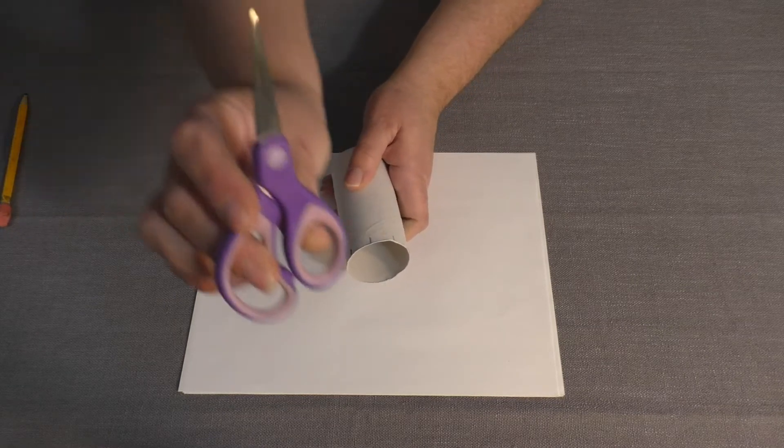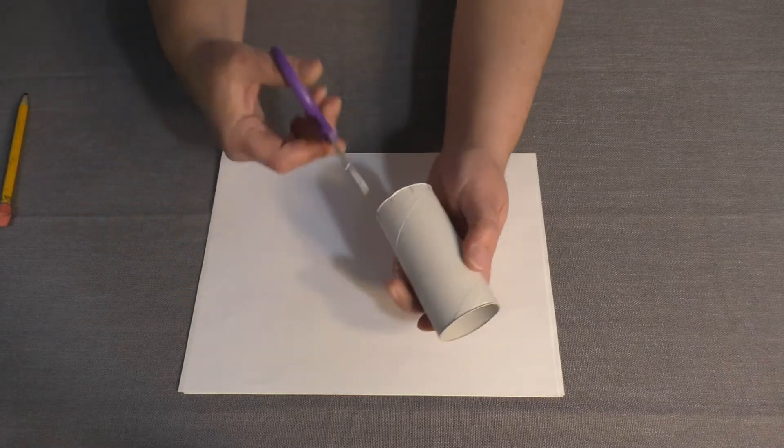Step 2. Use your scissors to cut about one-third into the tube.